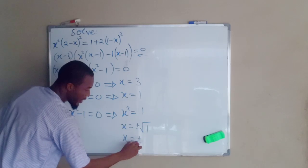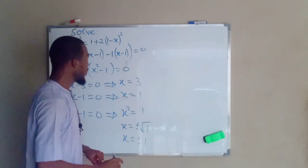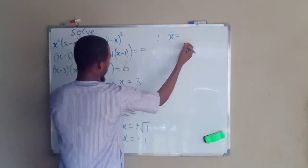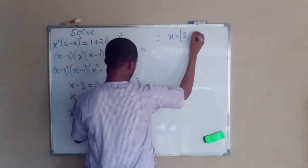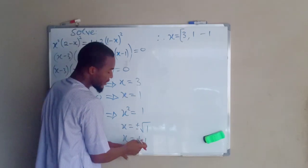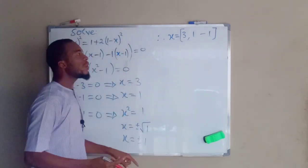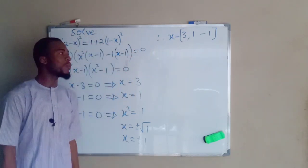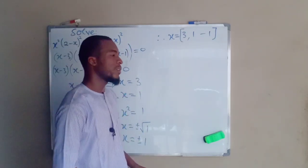We have now obtained all the real solutions. Therefore x equals 3, x equals 1, and x equals negative 1. Note that positive and negative 1 come from the last factor, but since we already have positive 1 from the second factor, we write it once. These are the real values of x in this equation, and each value will satisfy the original equation. Thank you for watching — stay tuned for our next tutorial, which is going to be on integral calculus.